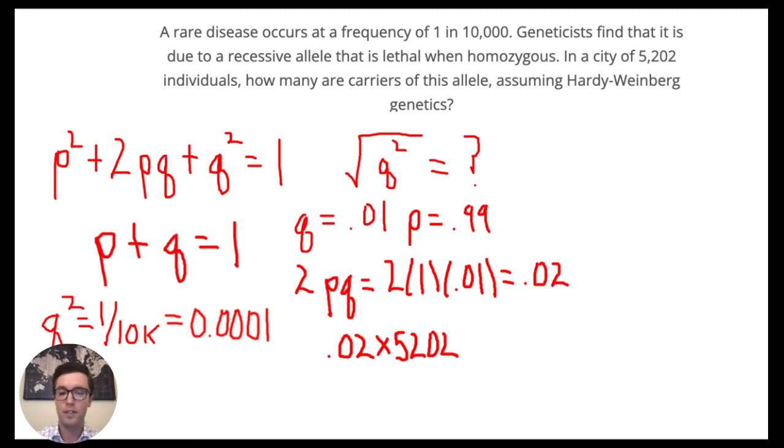So 2 of those would be 52 times 2, which is 104. So we know that roughly there are about 104 carriers of this allele in the city of 5,202 individuals.